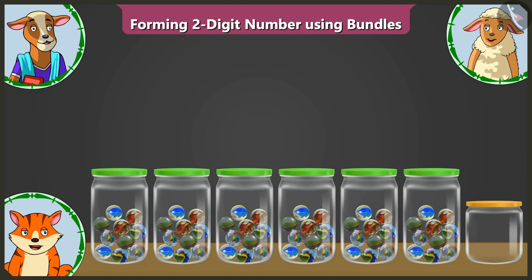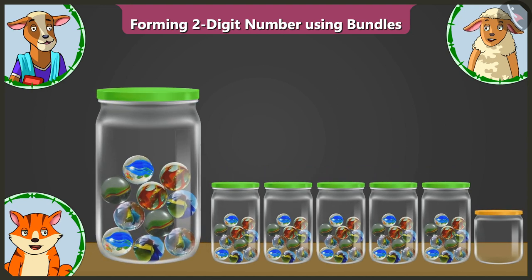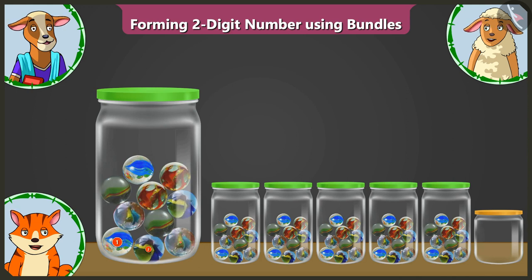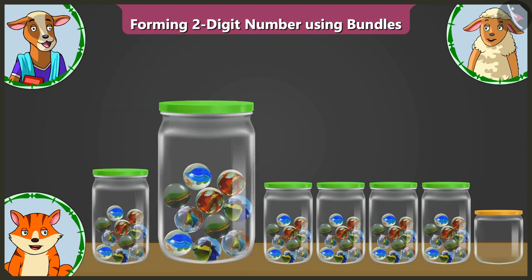Look, here are some jars filled with marbles. Let us count. The first jar has 1, 2, 3, 4, 5, 6, 7, 8, 9 and 10 marbles. This means that this is one group of 10s.